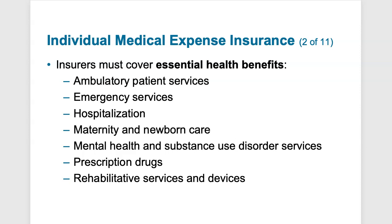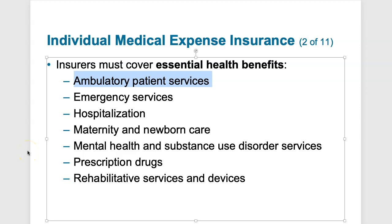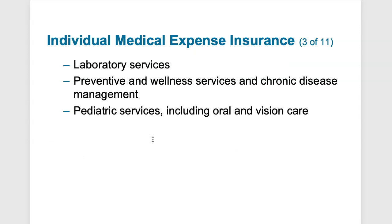The essential health benefits include ambulatory patient services — services you can get without being hospitalized, such as blood work, CT scans, diagnostics, colonoscopies, and mammograms. Also included are emergency services, hospitalization, maternity and newborn care, mental health and substance abuse, prescription drugs, rehabilitation services and devices, laboratory services, prevention and wellness services, chronic disease management, pediatric services, and oral and vision care.